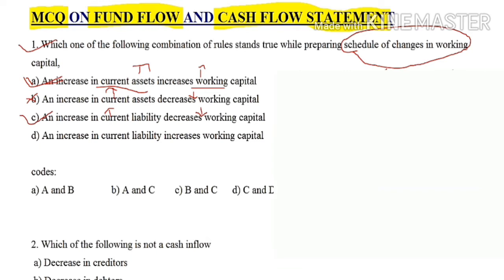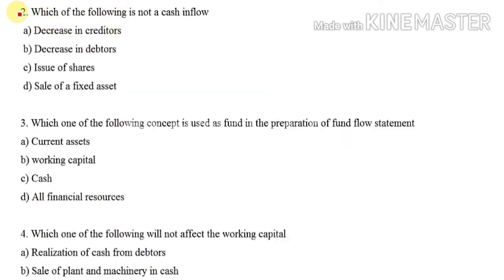The next option says: an increase in current liabilities increases working capital. This option is wrong, because an increase in current liabilities actually decreases working capital, not increases it. So the correct answers are options A and C.